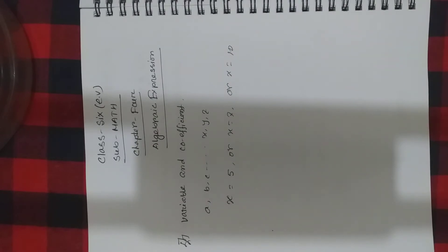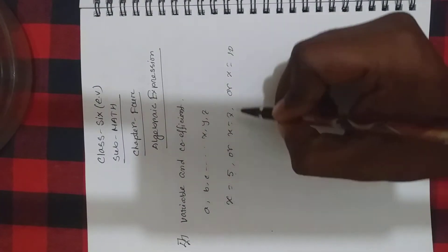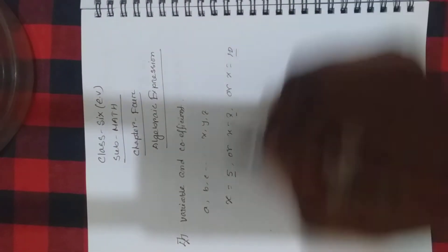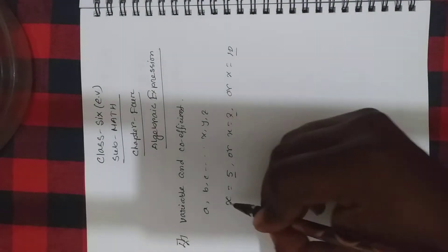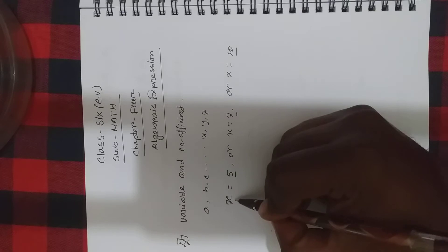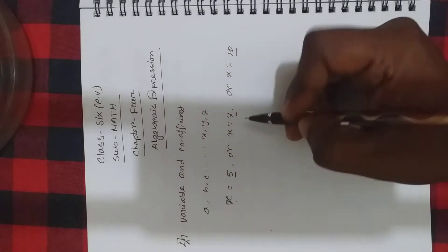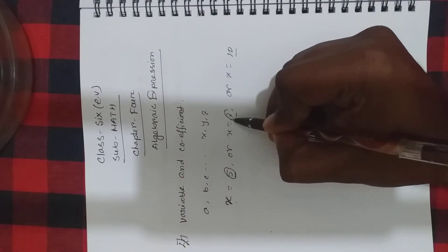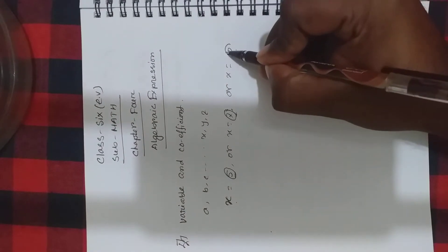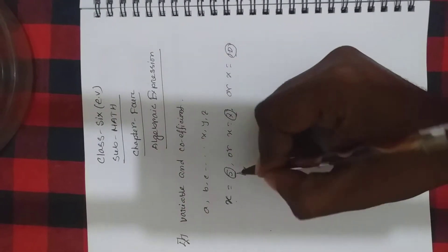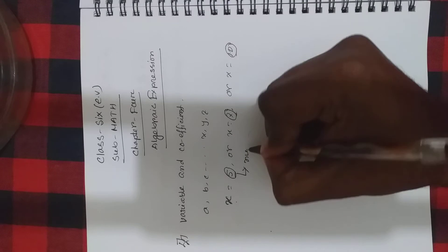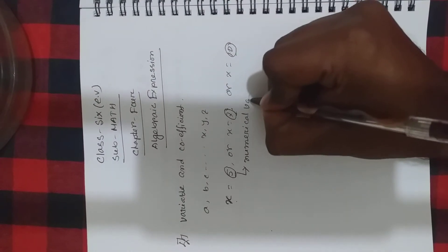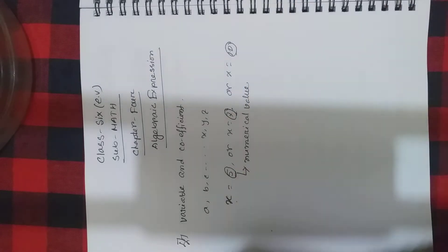Now, we find out X equal 5, X equal 7, X equal 10. Here, 5, 7, and 10 are numerical values. We find out the value of X. So X is an unknown expression. X equal 5 means 5 is a numerical value; X equal 7 means 7 is a numerical value, and 10 is a numerical value. X is there — we find out the value of X.